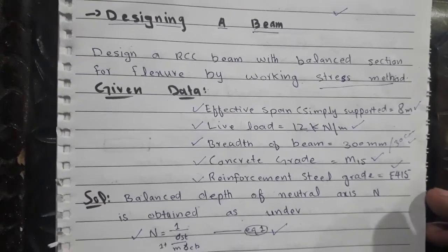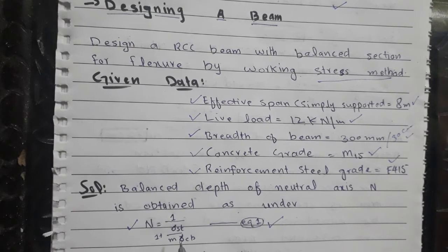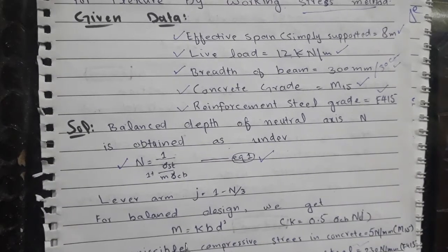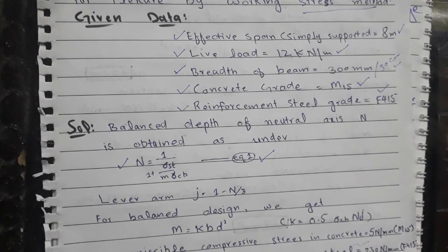To design the beam, first we find the balanced neutral axis depth ratio, obtained by the formula: n = 1 divided by (1 plus permissible tensile stress in steel divided by modular ratio multiplied by permissible compressive stress in concrete). After this, lever arm j = 1 minus n divided by 3. For balanced design, the moment M = K multiplied by b multiplied by d squared, where K = 0.5 multiplied by permissible compressive stress in concrete multiplied by n multiplied by j.